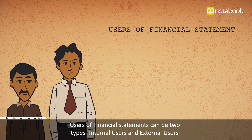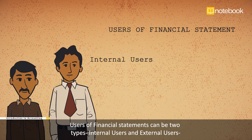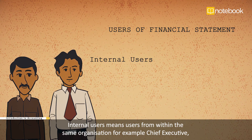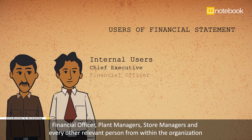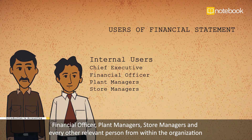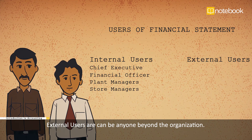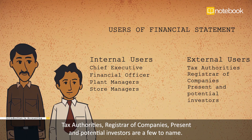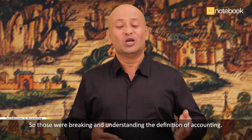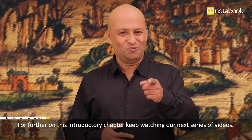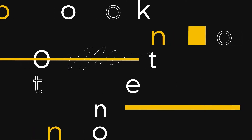Interested users or end users of information: users of financial statements can be of two types — internal users and external users. Internal users are from within the same organization, for example the chief executive, financial officer, plant managers, store managers, and every other relevant person within the organization. External users can be anyone beyond the organization: tax authorities, registrar of companies, and present and potential investors are a few to name. Those were the key points for breaking down and understanding the definition of accounting. For further topics in this introductory chapter, keep watching our next series of videos. We'll see you next time. Bye.